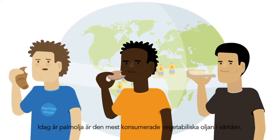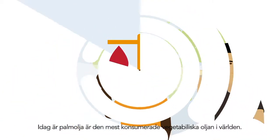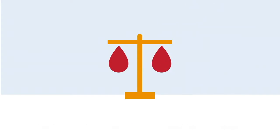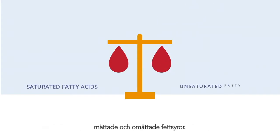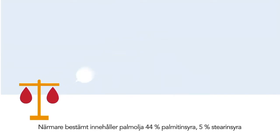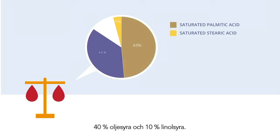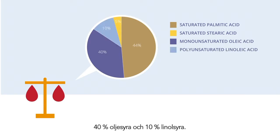Today, palm oil is the most widely consumed vegetable oil in the world. Palm oil has a unique and balanced composition of saturated and unsaturated fatty acids. More specifically, palm oil contains 44% palmitic acid, 5% stearic acid, 40% oleic acid and 10% linoleic acid.